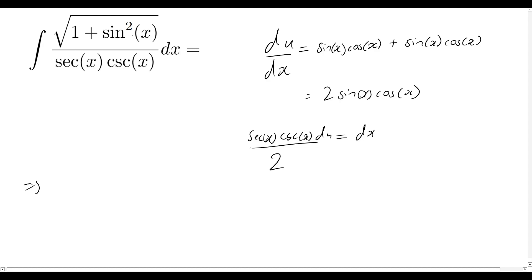So square root of 1 plus sin squared x, well we said that that was equal to u. So our problem now becomes the integral of the square root of u all over sec x csc x, and now multiplying that by our dx, but now we're rewriting that as sec x csc x all over 2 and then du as well.